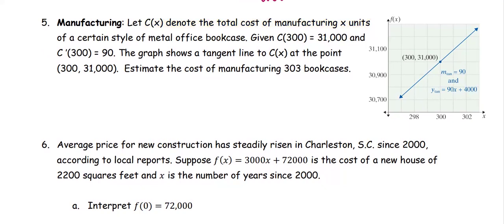In this problem, let C(x) denote the total cost of manufacturing x units of a certain style of metal office bookcase. Given C(300) = 31,000 and C'(300) = 90, the graph shows a tangent line to C(x) at the point (300, 31,000). Estimate the cost of manufacturing 303 bookcases.